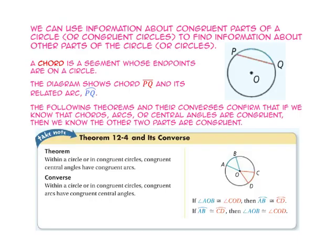We can use information about congruent parts of a circle or congruent circles to find information about other parts of a circle or circles. A chord is a segment whose endpoints are on the circle. Segment PQ is a chord, and its related arc is arc PQ. The theorems and converses on the next couple slides confirm that if we know that chords, arcs, or central angles are congruent, then we know the other two parts are congruent.